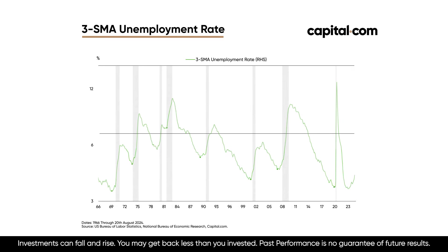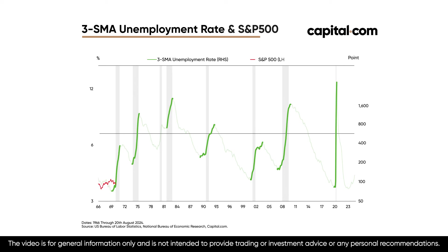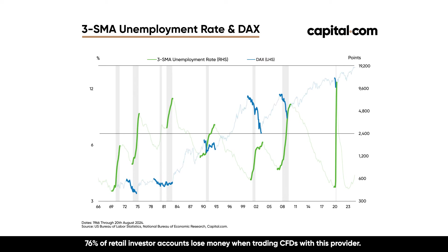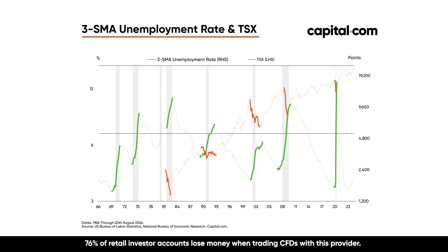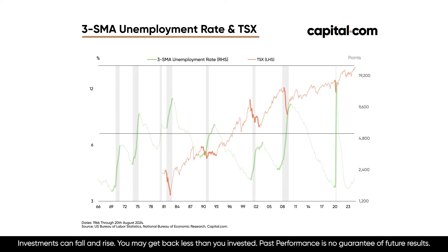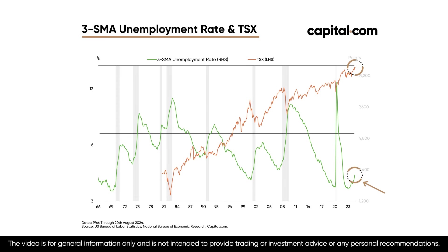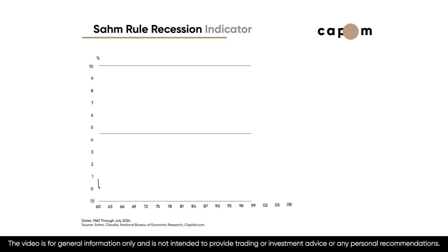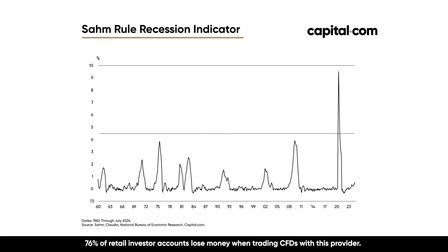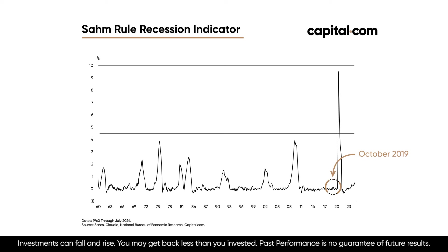Periods where the unemployment rate is rising are typically not a good thing for the stock market. Whether we look at the S&P 500 for the United States, the DAX for Germany, or the Toronto Stock Exchange for Canada, global recessions tend to be a bad thing for the stock market. And with many of these indices trading at all-time highs today, it's only normal for investors to get worried about something like the SOM rule triggering. Something to keep in mind is that although we have 65 years of data for the SOM rule, this is an indicator that was only recently developed in October of 2019.